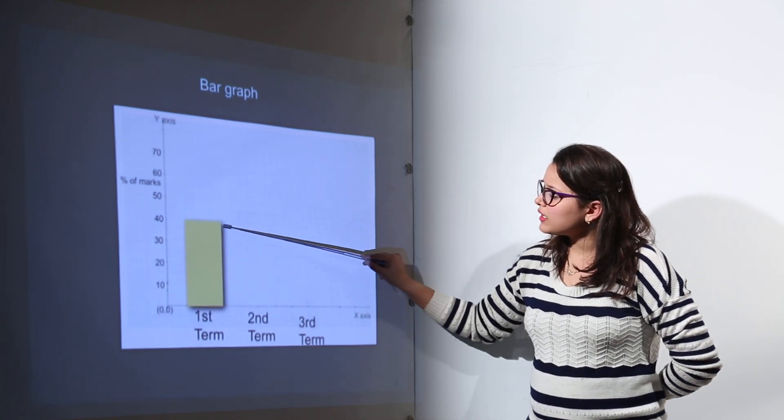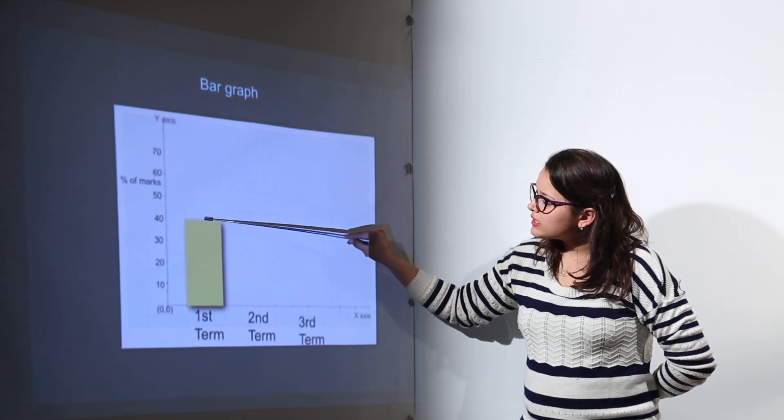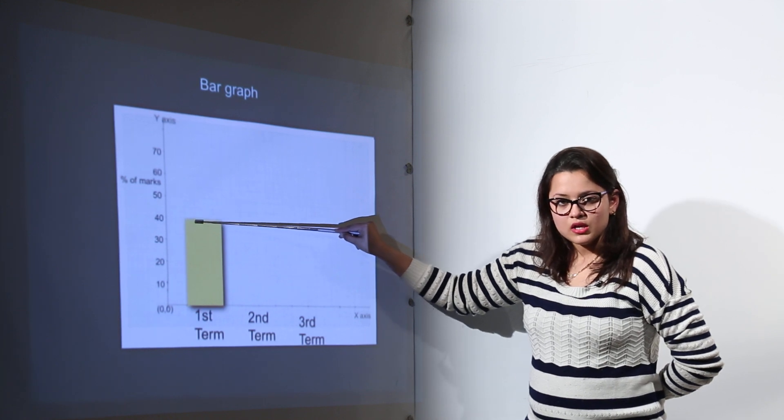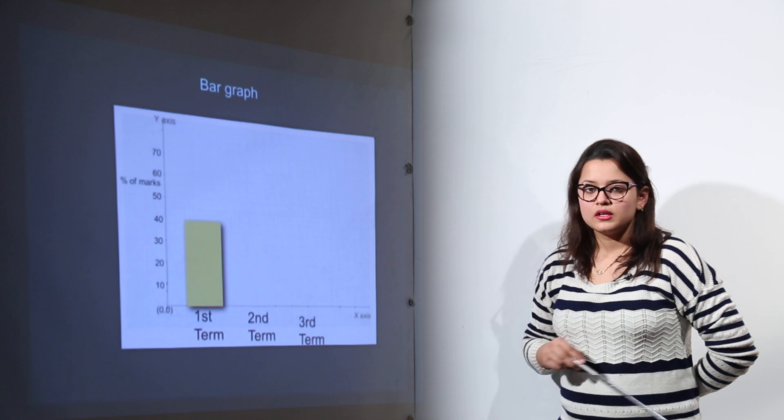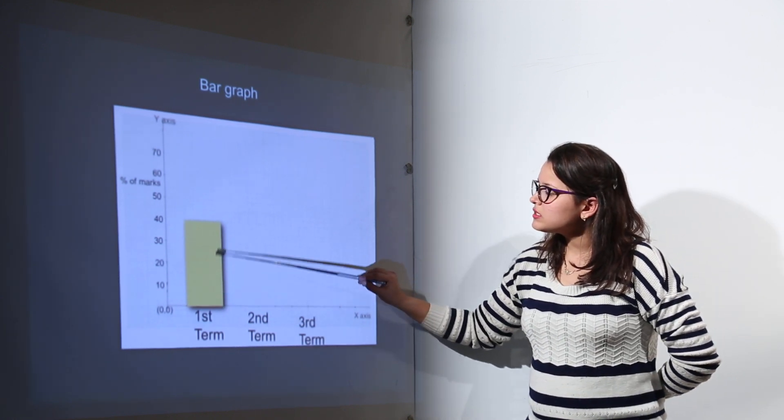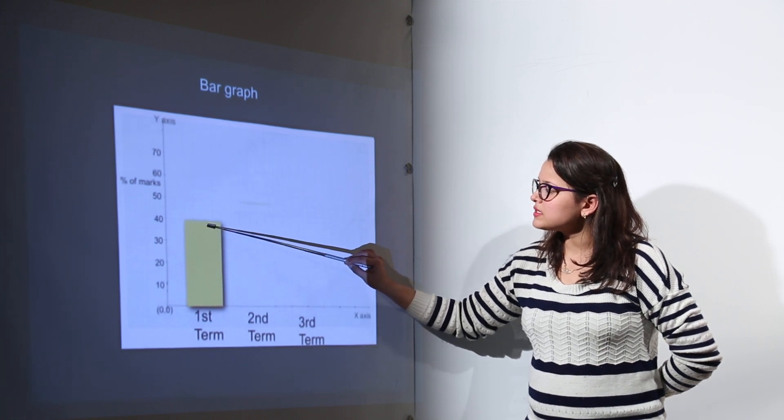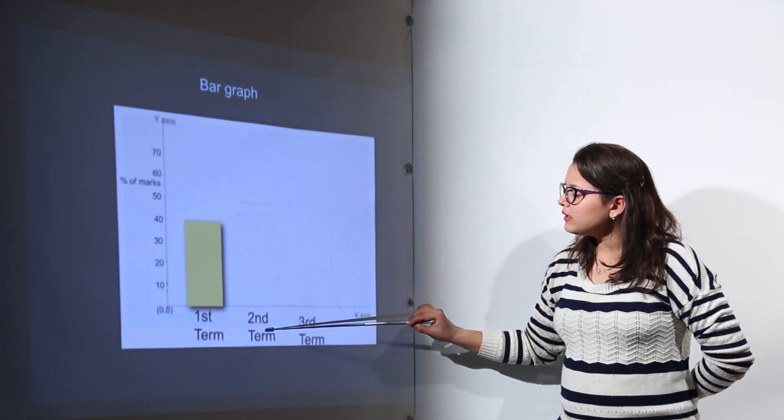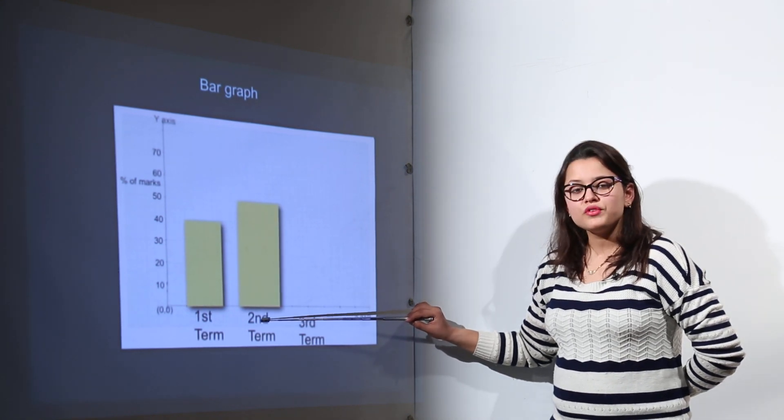Now the first graph that you can see, the first bar is depicting the student secured, this line is representing the 40% marks. So in the first term the student has secured 40% marks. The graph is clearly representing the student secured marks in the first term is 40%. Now for the second term, what was the question? For the second term the student has secured 50% marks.